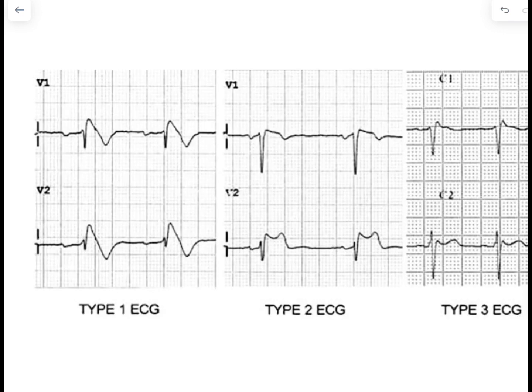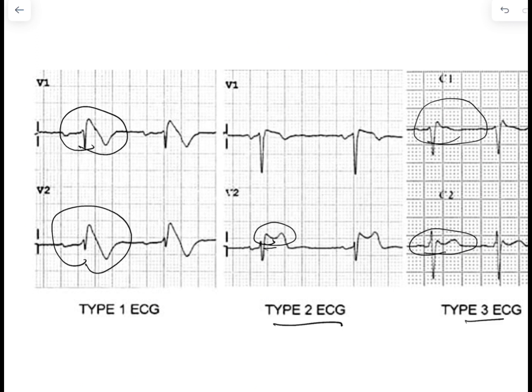Let's have a look at the other two ECG patterns previously termed Brugada type 2 and type 3, which are no longer used. In the type 2 pattern, there is ST elevation of at least 2 mm in any 2 of V1 to V3, but the shape of the ST elevation is a saddle shape — not coved upward as in type 1. Type 3 is ST elevation of less than 2 mm. Both type 2 and type 3 are no longer considered Brugada patterns; they are of historical significance only.